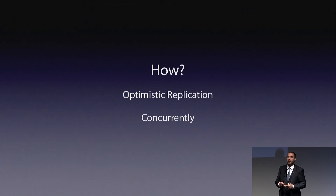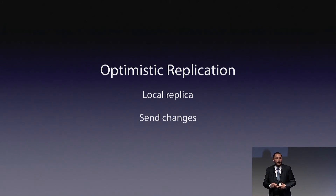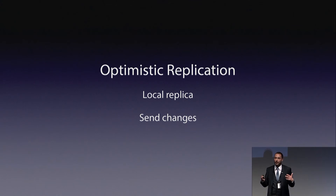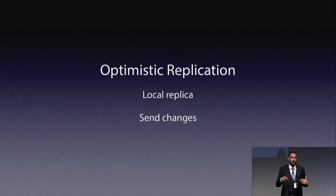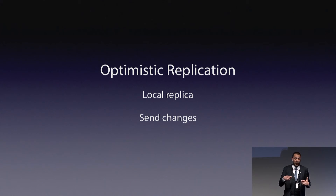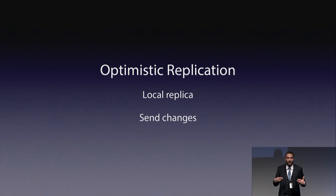What is optimistic replication? This is the idea of having a local replica — a local copy — of your documents. When you make an edit, you apply it directly onto your local version of the document, so the edit can be almost instantaneous.